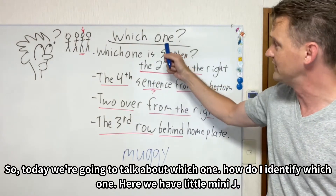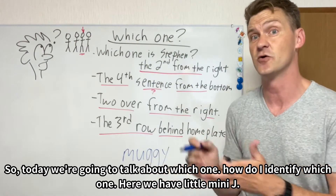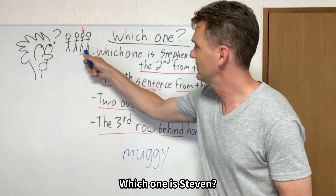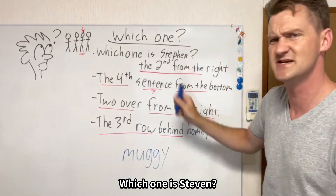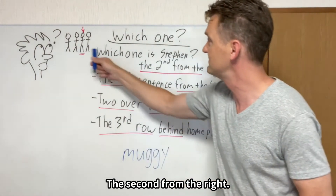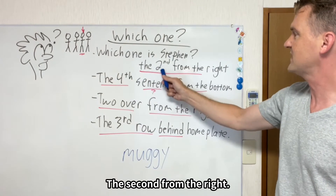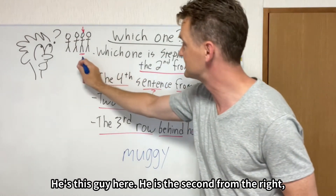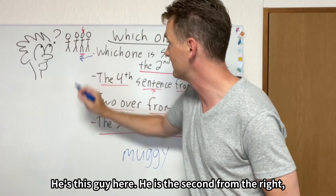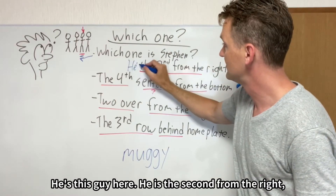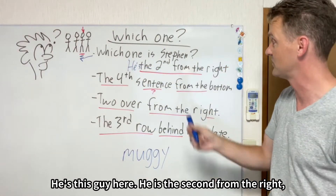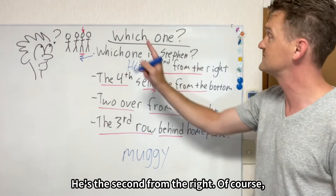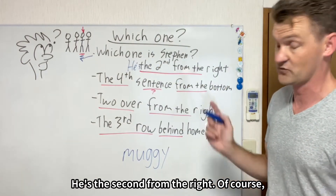So today we're going to talk about how to identify 'which one.' So here we have little mini Jay — which one is Steven? He's the second from the right. 右から2番目. He's the second from the right.